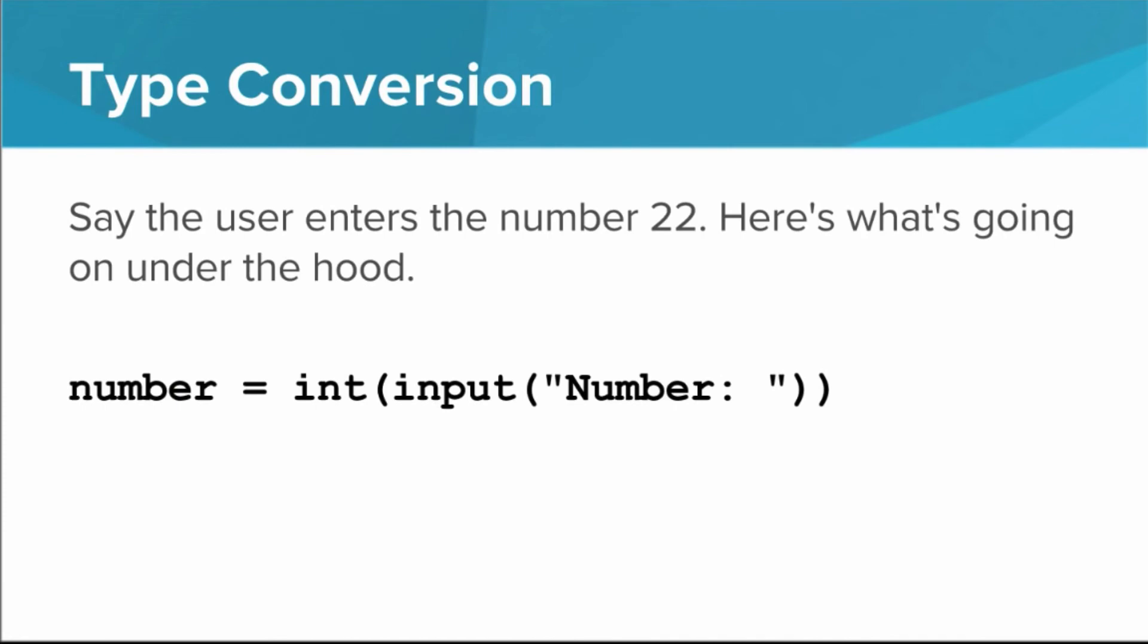Let's step through what Python does assuming the user enters the number 22. The input function prints the prompt, and the user types 2, 2, and the enter key. Python then replaces the call to input with the string 22. The int function then takes the string 22 and turns it into the integer 22. This is what ultimately gets stored in number.